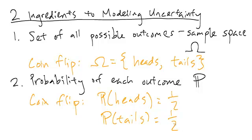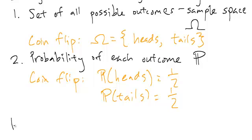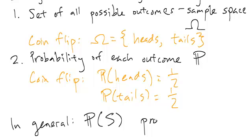In general, in this class, we will use P of S to mean the probability of S happening, such as the probability of heads happening.